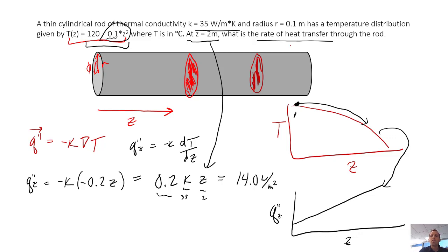However, we are asked to get the total rate of heat transfer, which would have units of watts rather than watts per meter squared. So what do we need to do? We need to multiply our flux by the appropriate cross-sectional area. So heat is flowing this way through the cylinder, represented by our positive heat flux the entire time. So we need to take that flux, 14 watts per meter squared, and multiply that by the appropriate area, which is this cross-sectional area of the cylinder.